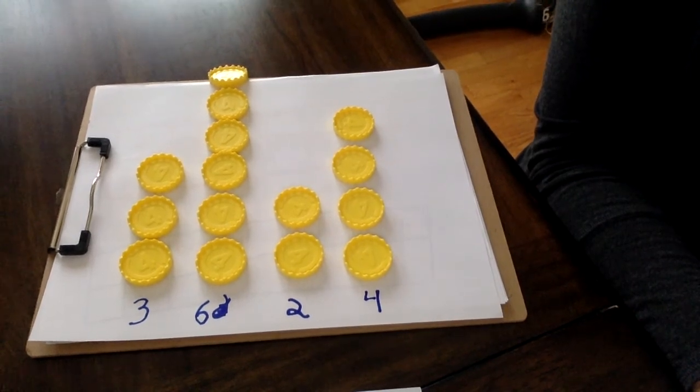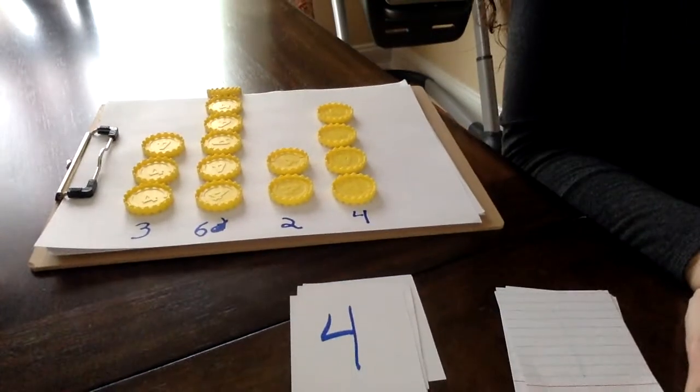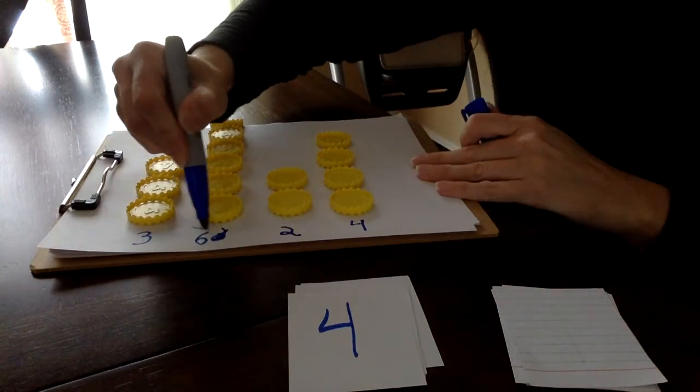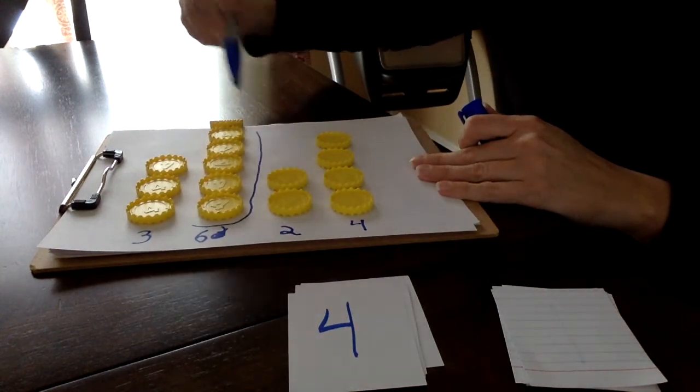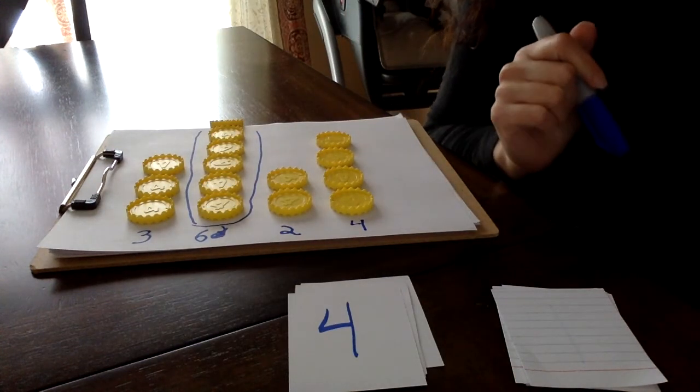Yep, that's right. 6, right? Because we can see that 6 is my tallest line. So once you know which one is your longest, you're going to go ahead and circle the one that is the longest.